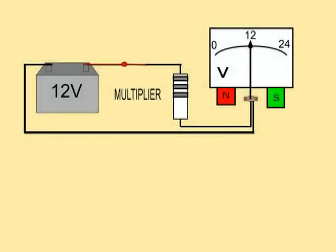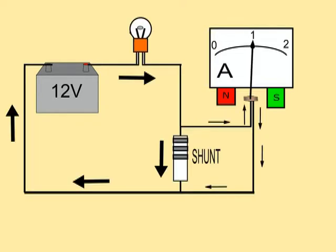In the previous video we were talking about measuring instruments for direct current, also called DC. Now we are going to take a look at the instruments for measuring alternating current, also known as AC.